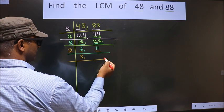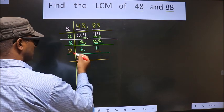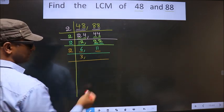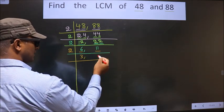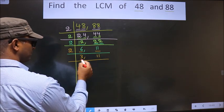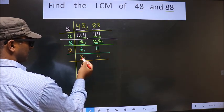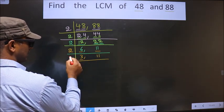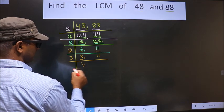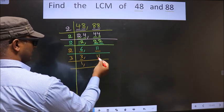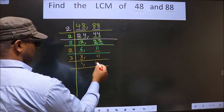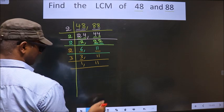The other number is 11. 11 is not divisible by 2, so you write it down as it is. Now here we have 3 — 3 is a prime number, so we take 3 once: 1×3=3. 11 is not divisible by 3, so you write 11 as it is.